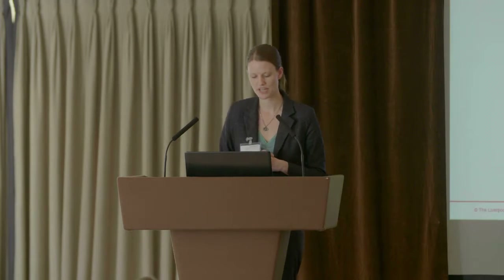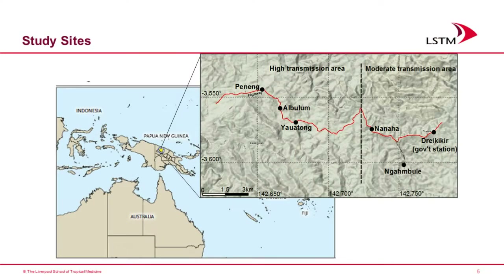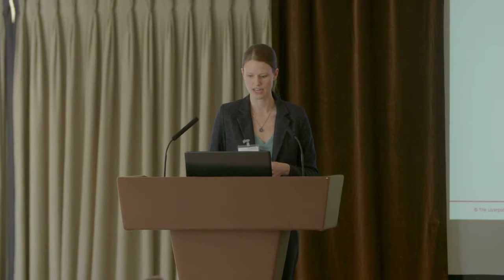This study was done in East Sepik province of Papua New Guinea. There are five villages near the Dry Kikir station; two of these villages had moderate transmission and the other three had relatively high transmission. Colleagues and I have been working in these communities for many years, measuring transmission dynamics surrounding the first MDA in the 1990s and then ten years later surrounding the distribution of long-lasting insecticide-treated nets.